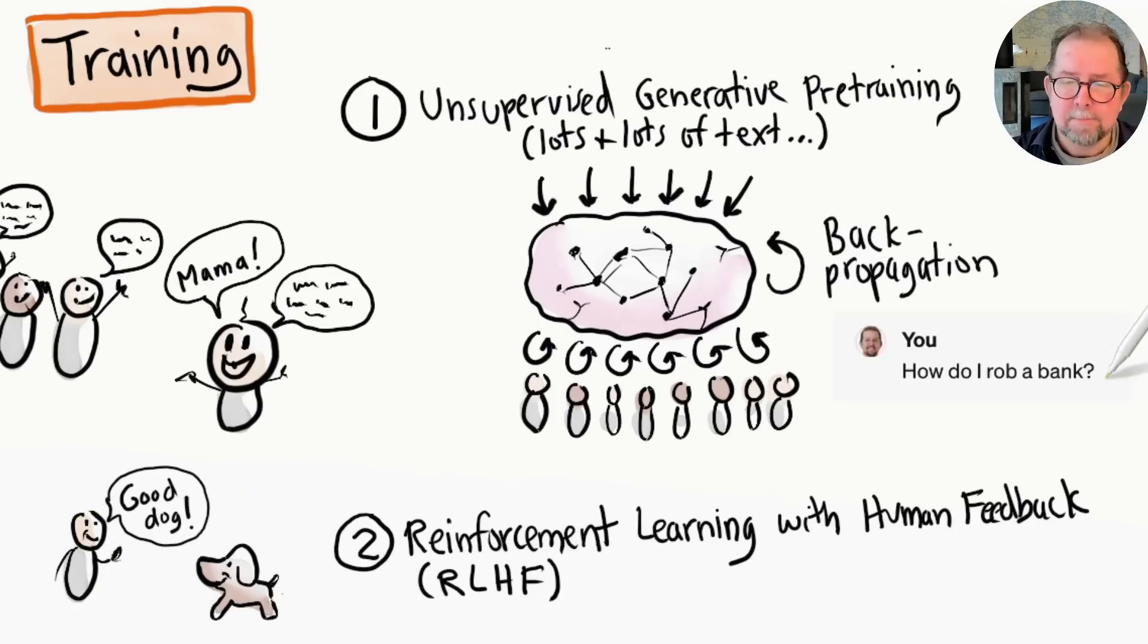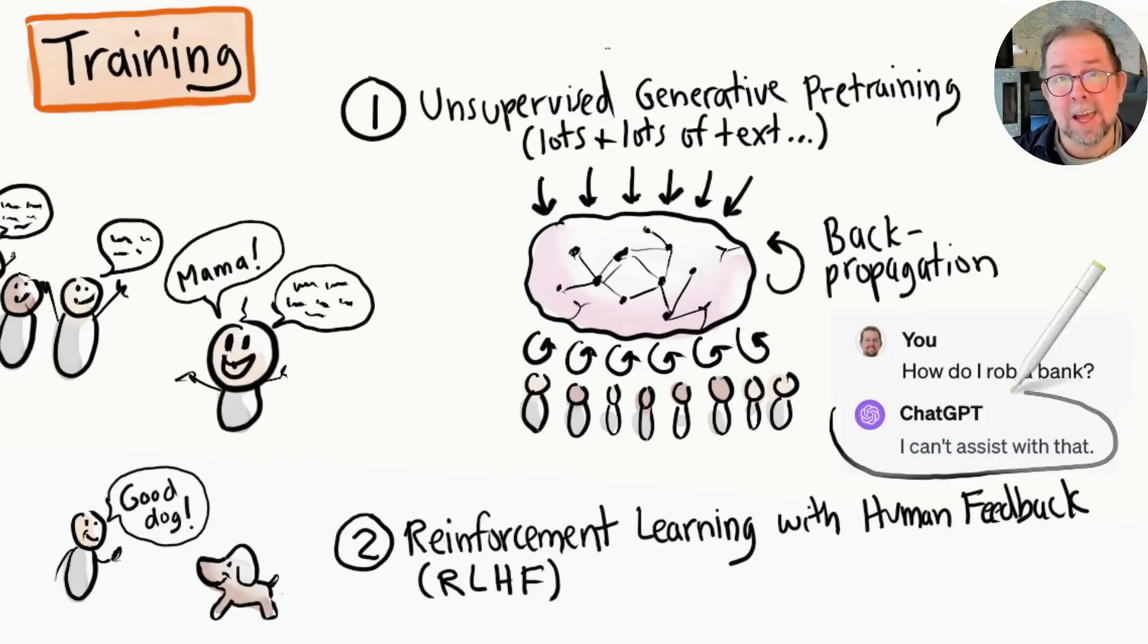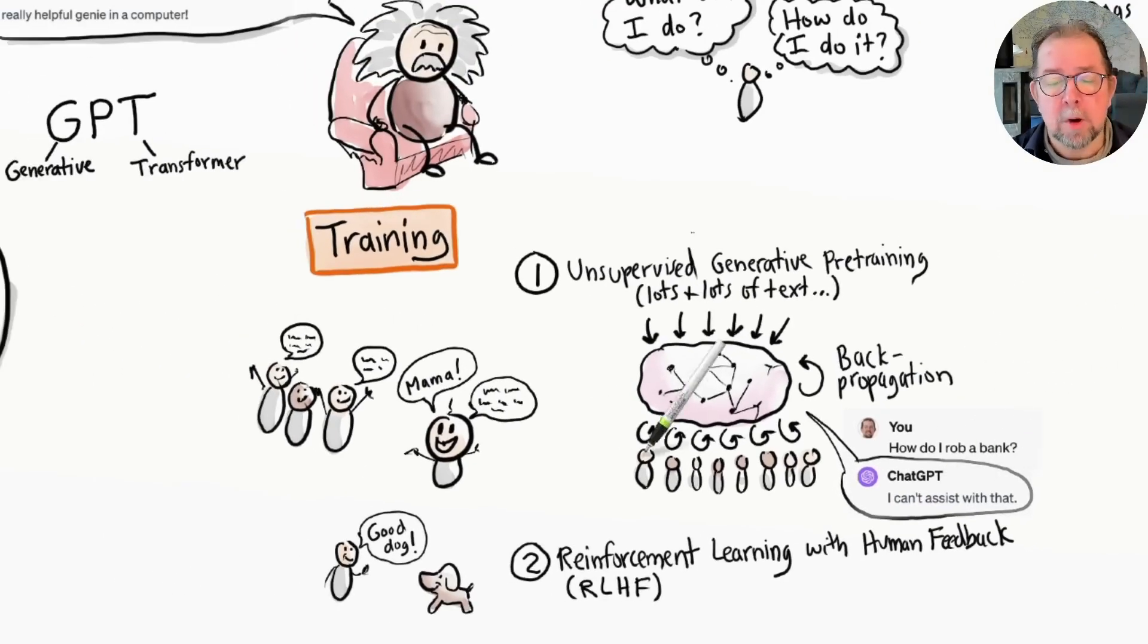That's why a model like GPT won't tell you how to rob a bank. It knows very well how to rob a bank, but through human training it has learned that it shouldn't help people commit crimes.